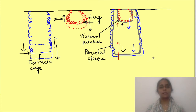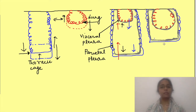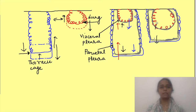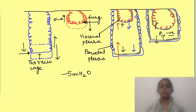This keeps the lungs a bit expanded and the thoracic cage a bit collapsed from their resting positions, creating a balance of forces. Because of these opposing forces, the layers of pleura tend to move to opposite sides — parietal pleura with the thoracic cage and visceral pleura with the lungs — creating a negative pressure inside the pleural cavity of approximately minus 5 cm water at rest. This is just the natural tendency of these elastic tissues at work, with no muscles involved.